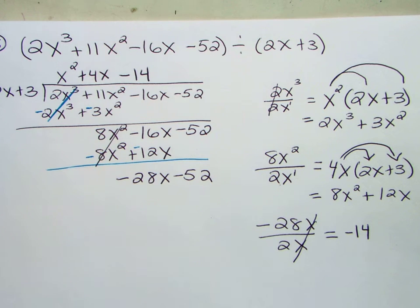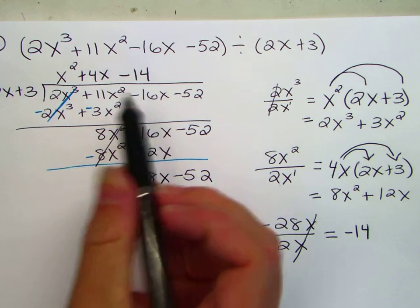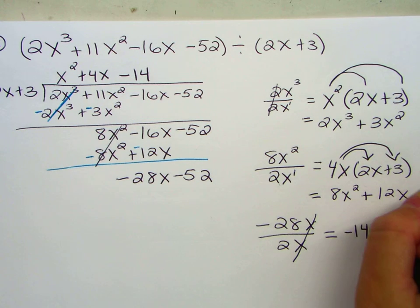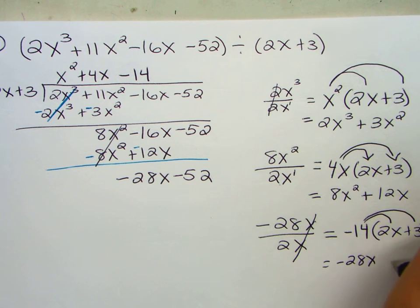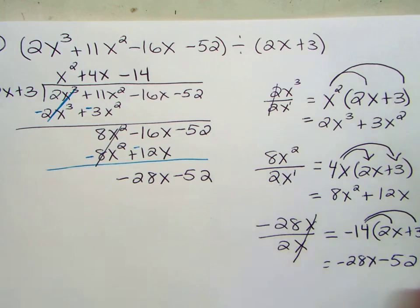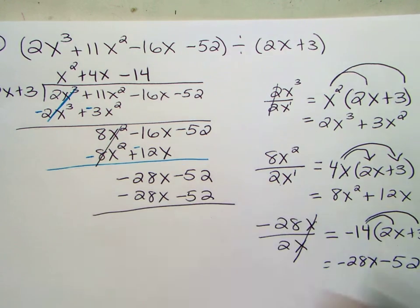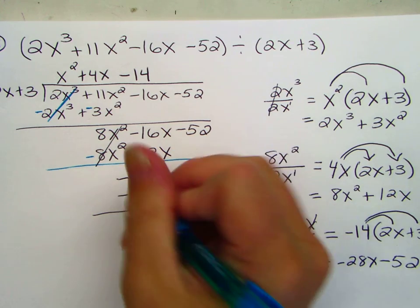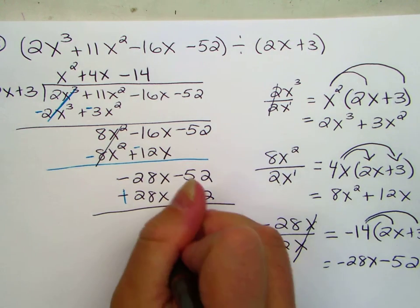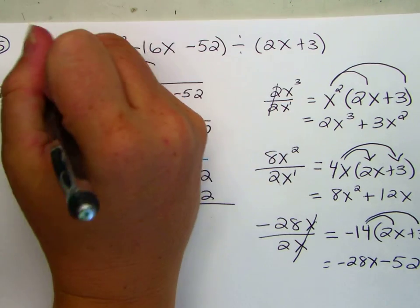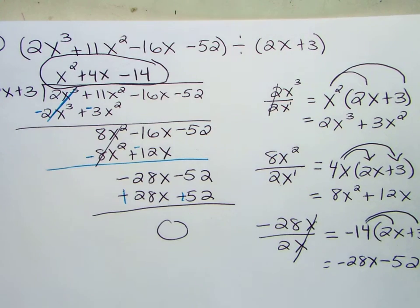Negative 14. Take a magical guess what you think you're going to get when you distribute negative 14 times 2x plus 3. Negative 28x, negative 14 times 3, negative 52. Oh, hey. We got the same thing. Change the sign. Everything is 0. So this is our answer. Okay. Not that much harder. Not that much harder.